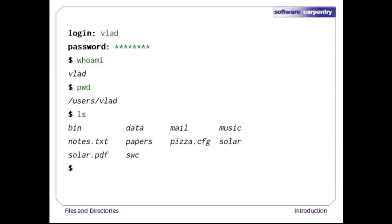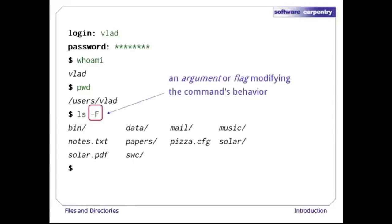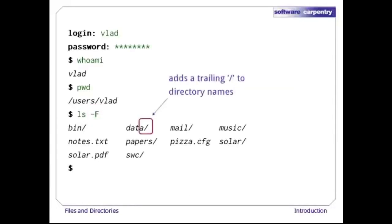To make its output more comprehensible, we can give it the argument or flag -F. This tells ls to add a trailing slash to the names of directories. As you can see, there are seven of these. The names without slashes — notes.txt, pizza.cfg, and solar.pdf — are plain old files.